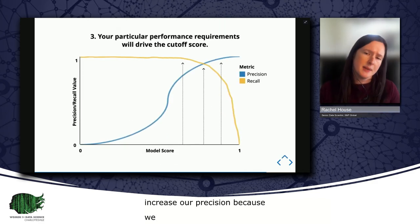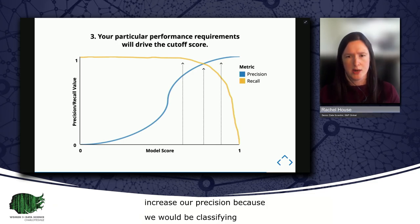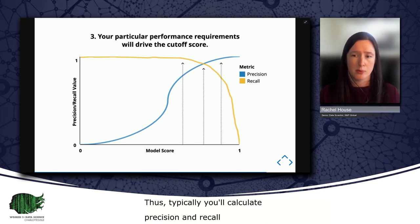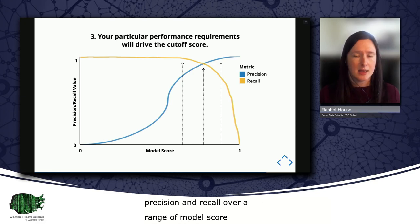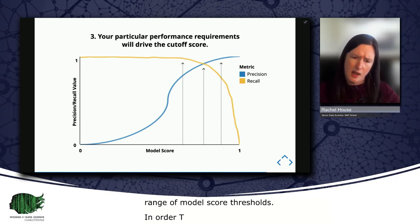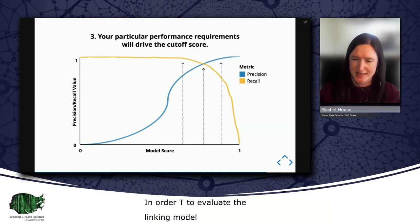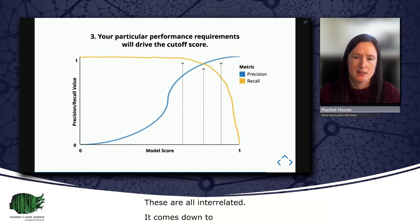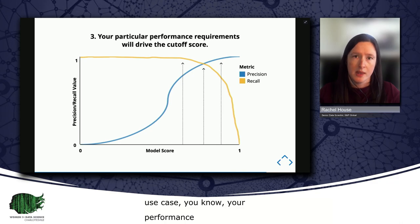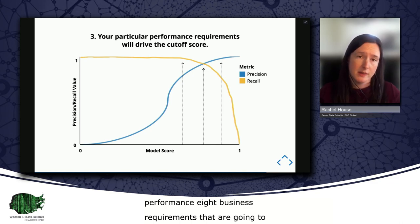Thus, typically, you'll calculate precision and recall over a range of model score thresholds in order to evaluate your linking model performance at those thresholds, as well as figure out where to set your cutoff. The cutoff, precision, and recall, they're all interrelated, as you can see here. And it really comes down to your particular use case, your performance and business requirements that are going to drive your selection of the cutoff score, and therefore the evaluation of the linking model.